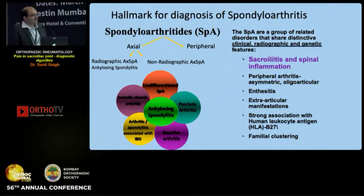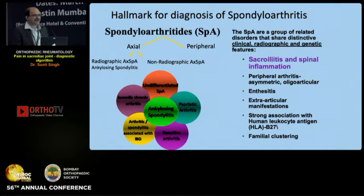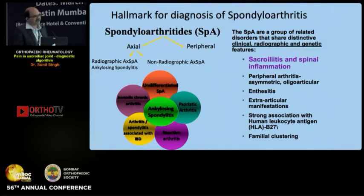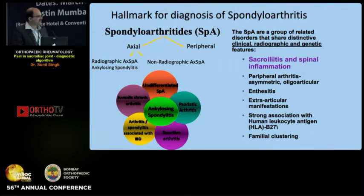Sacroiliitis has gained importance as a hallmark for the diagnosis of spondyloarthritis, which we classify as peripheral and axial; axial is further classified as non-radiographic and radiographic. Radiographic axial SpA is essentially ankylosing spondylitis. Remember this is a family of disorders with shared clinical, radiographic, and genetic features — AS is the prototype but not the only illness, a mistake often seen in clinical practice.